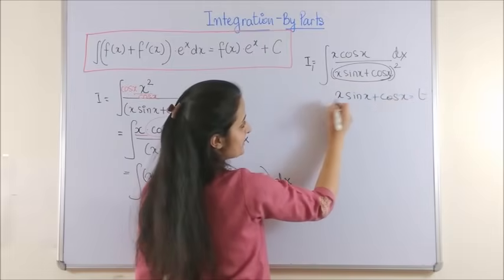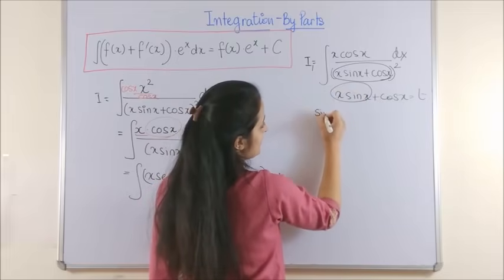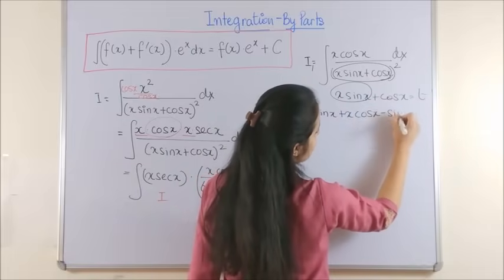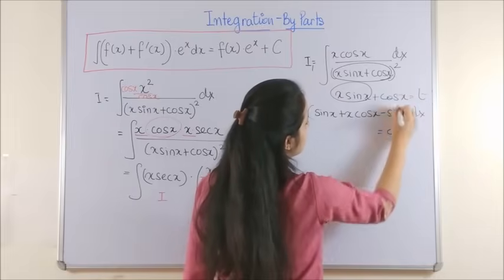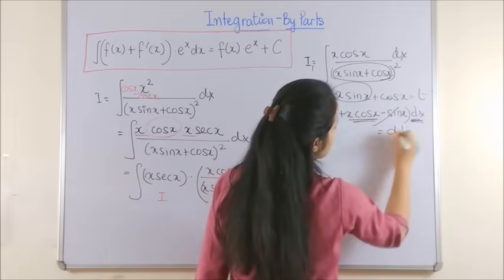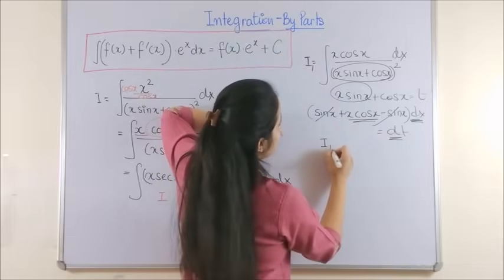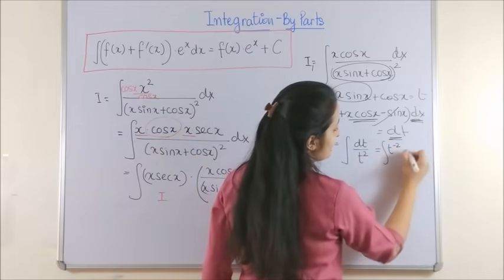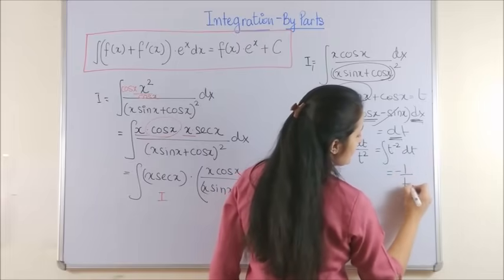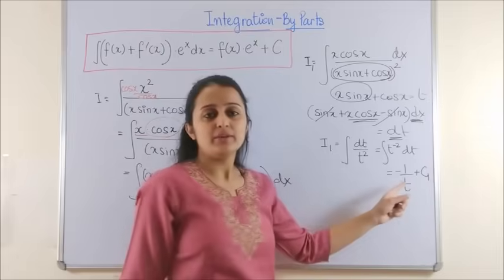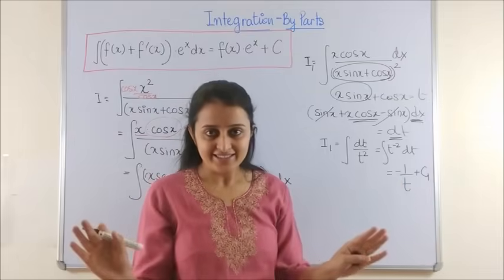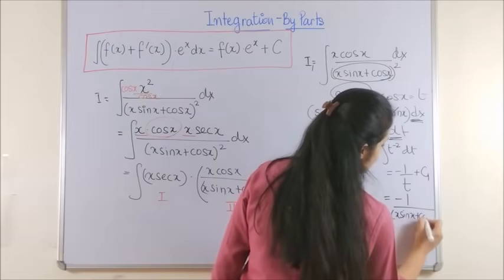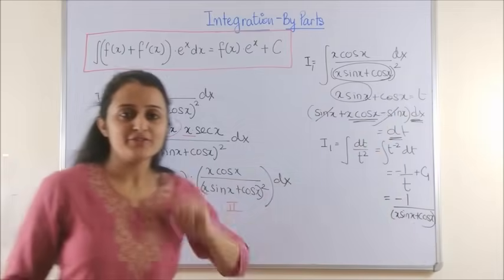The x·cos x dx term equals dt, which is right there. So I₁ becomes ∫dt/t², which gives us −1/t + C₁. Substituting back, the answer for I₁ is −1/(x·sin x + cos x). Now let's apply the by parts formula to the main integral.